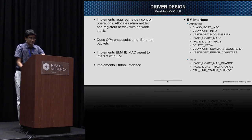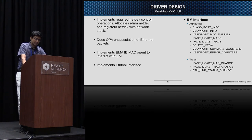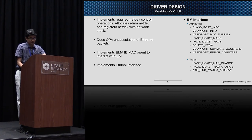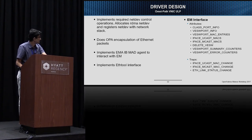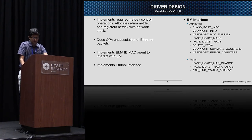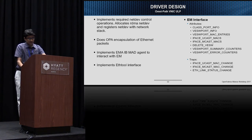The unicast and multicast MACs are queried by the Ethernet manager to know the unicast and multicast addresses associated with the VNIC, and there is an attribute to remove the virtual switch port VNIC, plus attributes to query summary and error counters. Traps are sent from the host back to the EM whenever there is a change to the unicast or multicast list associated with the virtual NIC, and whenever there is a change in the Ethernet link status.